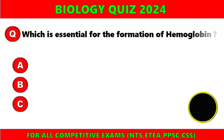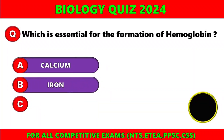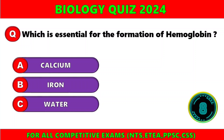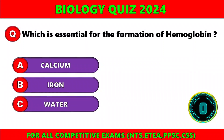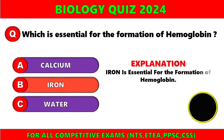Which is essential for the formation of hemoglobin? A) calcium, b) iron, c) butter. The right option is B — iron. Iron is essential for the formation of hemoglobin.